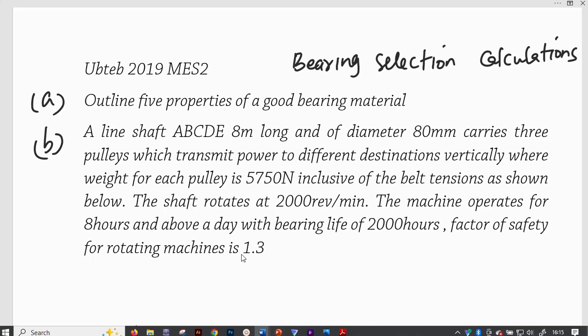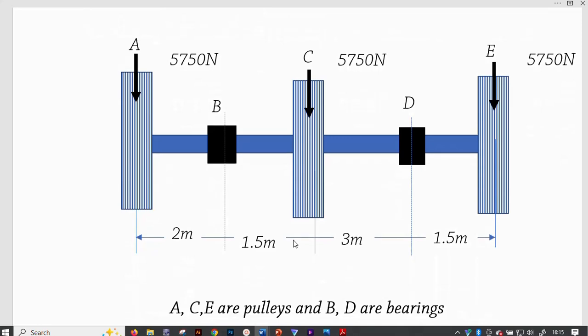Factor of safety for rotating machines is given as 1.3. This is the arrangement of pulleys mounted on the shaft that is rotating on bearings B and D. So, this is the 5,750 newtons on each pulley and this includes the weight of the pulley and the tensions that are as a result of the belt power transmission. Then, we have the distances. A to B is 2 meters. B to C is 1.5 meters. C to D is 3 meters. And D to E is 1.5 meters.